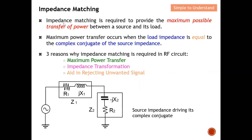Let's quickly revisit what impedance matching is. Impedance matching is required to provide the maximum possible transfer of power between a source and its load. In order to transfer all possible power from the source to the load, we need the source and the load to be matched. Maximum power transfer occurs when the load is equal to the complex conjugate of the source impedance.